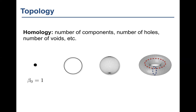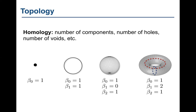A circle has one connected component but also has a hole — the missing center — so β₀ is one and β₁ is one, signifying one hole. Moving on to a sphere, there is no one-dimensional hole because every curve can be contracted to a point, so β₁ is zero, but the sphere encloses a void, so β₂ is one. Things can be more complicated for a torus: one component, two loops that cannot be contracted, and one enclosed void, giving β₀ equal to one, β₁ equal to two, and β₂ equal to one.